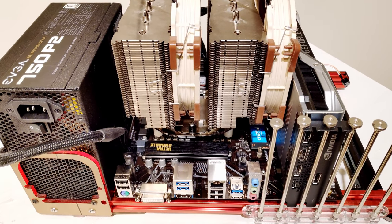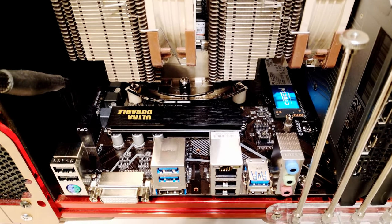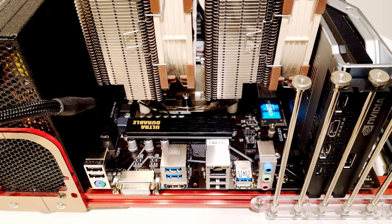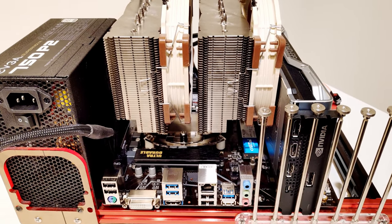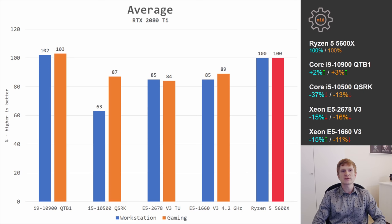All three — Ryzen 5 5600X, Core i9-10900 QTB1, and Core i5-10500 QSRK — deserve their own dedicated video, but I couldn't spend that much time per CPU. In the future I plan extra gaming benchmarks with an RX 6800 XT when released, and a dedicated video comparing the Ryzen 5 5600X with different DDR4 memory modules using different timings and XMP profiles. Leave a comment below to help me prioritize.